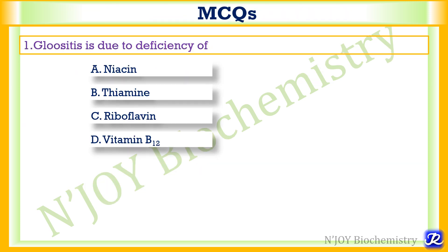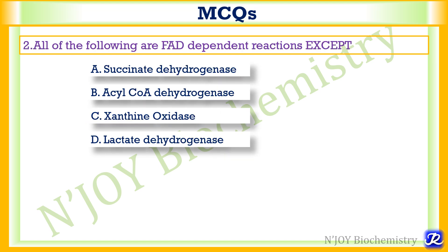Now let's see some MCQs. First: glossitis is due to deficiency of niacin, thiamine, riboflavin, or vitamin B12? Glossitis — the magenta-colored inflamed tongue — is caused by deficiency of riboflavin, that is vitamin B2. Second: all of the following are FAD-dependent reactions except succinate dehydrogenase, acyl-CoA dehydrogenase, xanthine oxidase, or lactate dehydrogenase? Succinate dehydrogenase (TCA cycle), acyl-CoA dehydrogenase (beta-oxidation of fatty acids), and xanthine oxidase (uric acid formation) all require FAD. Lactate dehydrogenase requires NAD, so the answer is lactate dehydrogenase.